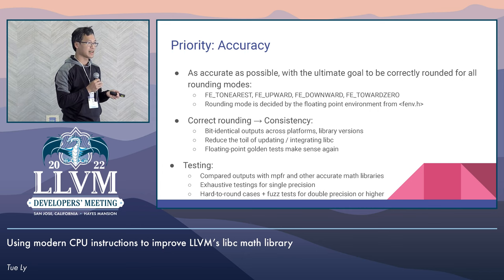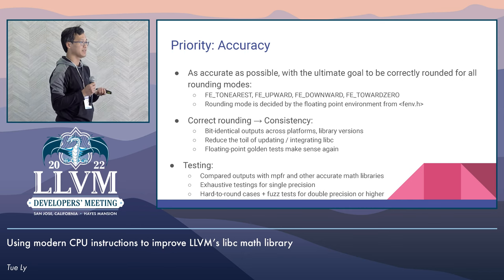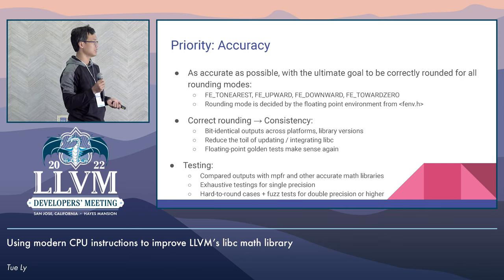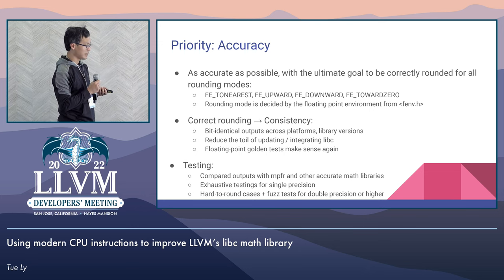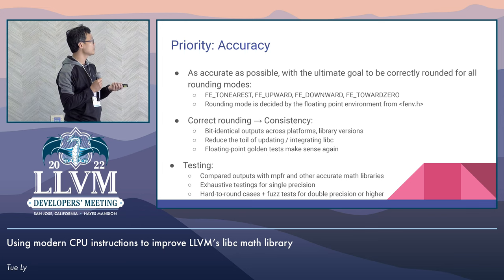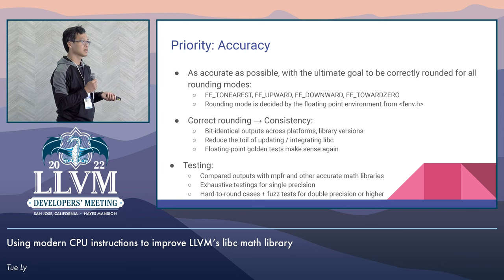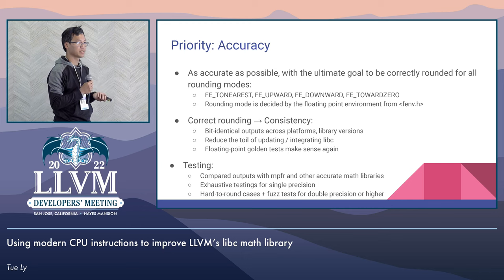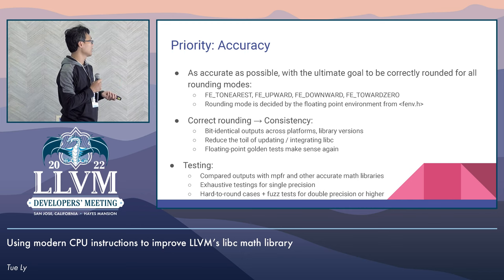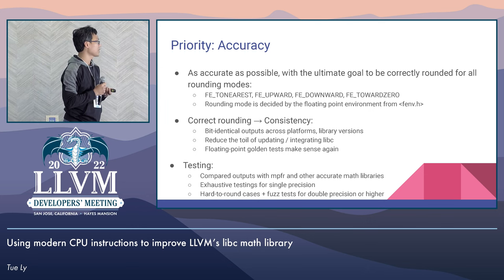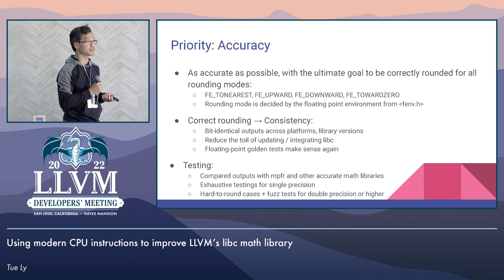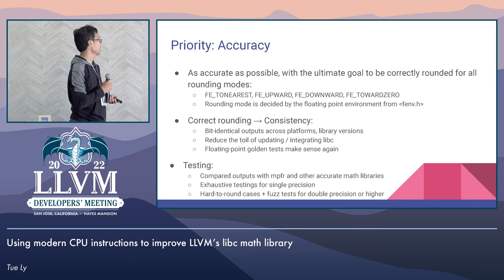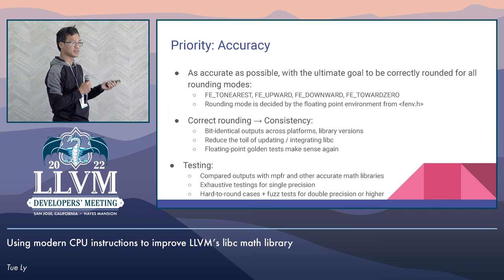When updating your math libraries, you don't have to worry about whether it's on ARM64, Intel, or RISC-V. Since the output is well-defined, we can use the floating-point output as a golden test, similar to how you do with integers. Currently for testing, we compare our outputs with MPFR and other accurate math libraries. For single precision, since the input range is manageable, we run exhaustive tests on the platforms. Double precision might need some more work.